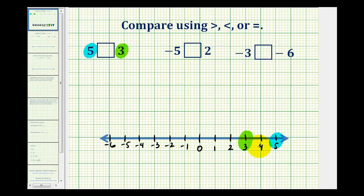Since positive 5 is to the right of positive 3, we can say that positive 5 is greater than positive 3, and this is the greater than symbol. If you think of this as an alligator mouth, it's always going to open toward the larger number, but it also points to the smaller number.